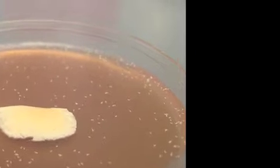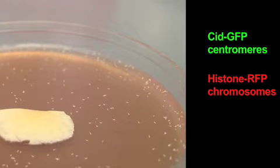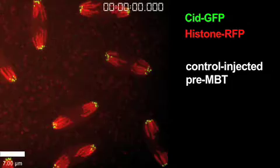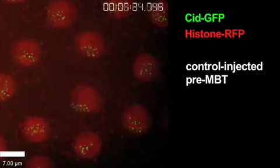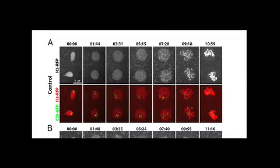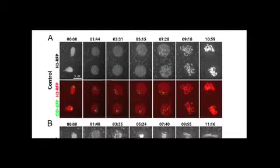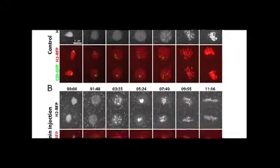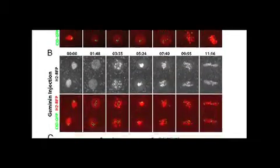The group also looked at the effect on the behavior of centromeres and chromosomes using Drosophila co-expressing SID-GFP and histone RFP. In control-injected embryos, mitosis proceeded as expected. Paired sister chromatids aligned during metaphase before going into anaphase. However, the group saw something different when geminin was injected into these embryos.